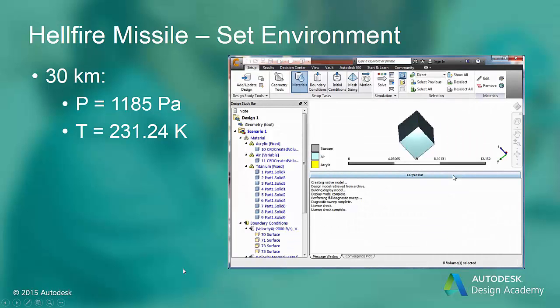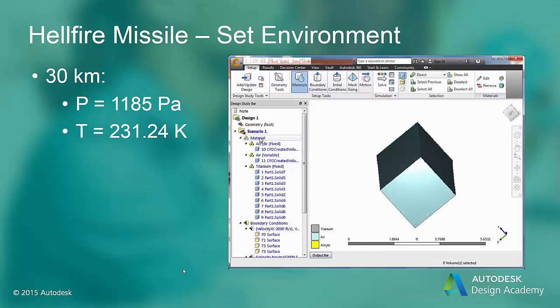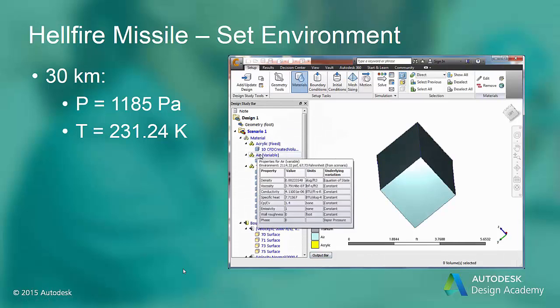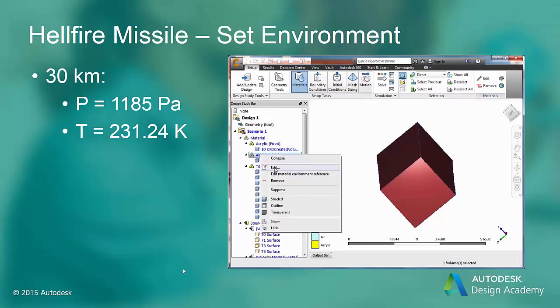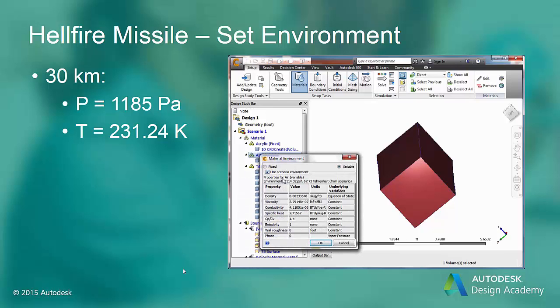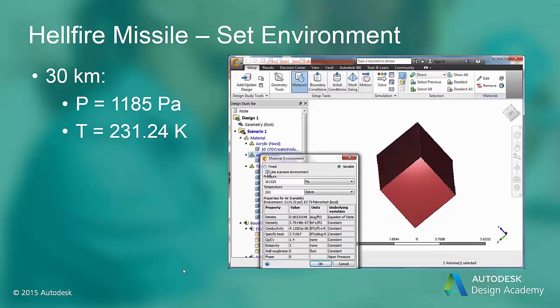Before we solve, we need to make sure the environment that is set at the peak with zero boundary condition that we set is for the correct environment. You can set the environment by editing the air material and setting the pressure and temperature for the environment that we are operating in. In this case, the environment is 30 kilometers above sea level, so we are going to set the pressure for standard atmosphere and the temperature at that elevation.